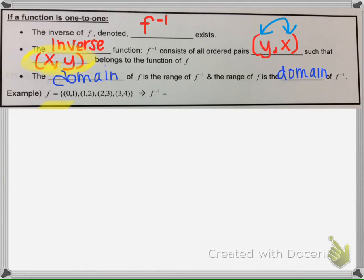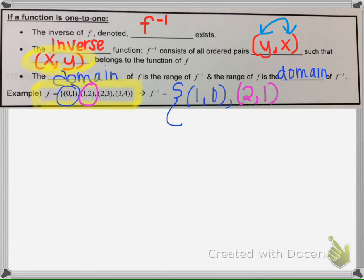For example, if we have a function with points, the inverse function is going to have the following points: instead of (0, 1), it will have (1, 0); instead of (1, 2), it will have (2, 1); instead of (2, 3), it would have (3, 2); and instead of (3, 4), it would have (4, 3).